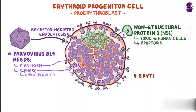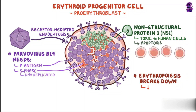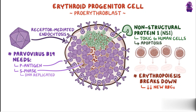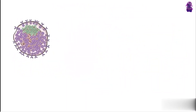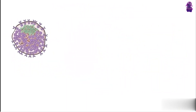This means that erythropoiesis breaks down, and fewer new red blood cells go into circulation as a result of Parvovirus B19 infection. But thankfully, this is only temporary.